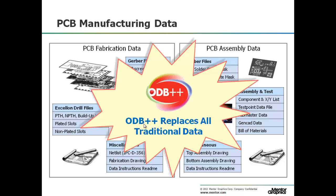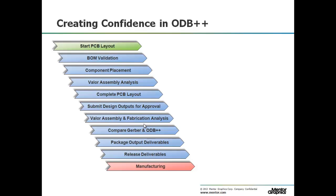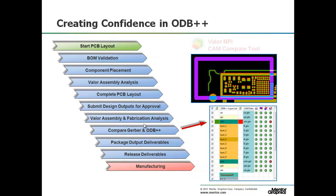In order to replace our traditional dataset of what I like to call dumb data, I first needed to have 100% confidence in the ODB++ as a data set. To accomplish this, for approximately six months, we added a step in our process to compare Gerber and ODB++ to ensure they matched. We did this using the Gerber compare feature within Valor MPI, and we had no mismatches over the course of approximately 100 design deliverables.